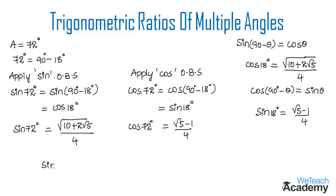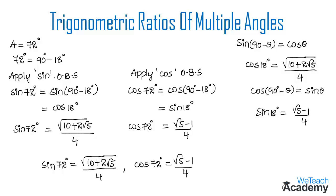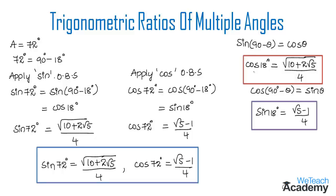So we derived: sine 72 degrees = √(10 + 2√5) / 4, which is the value of cos 18 degrees. And cos 72 degrees = (√5 − 1) / 4, which is the value of sine 18 degrees. Make a note of all these trigonometric ratio values for 18 degrees and 72 degrees: cos 18 = √(10 + 2√5)/4, sine 18 = (√5 − 1)/4, sine 72 = √(10 + 2√5)/4, cos 72 = (√5 − 1)/4.